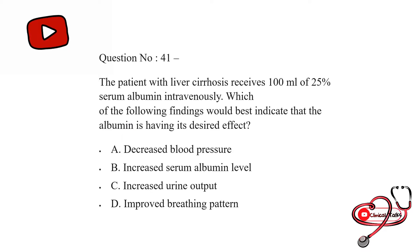A patient with liver cirrhosis receives 100 ml of 25% serum albumin intravenously. Which of the following findings would best indicate that the albumin is having its desired effect? Option first: decrease in blood pressure; second: increase in serum albumin level; third: increase in urine output; last: improved breathing pattern. The correct answer is increase in urine output.